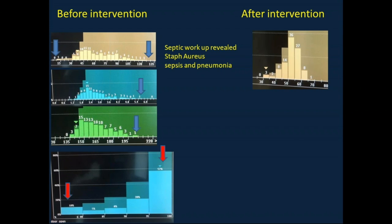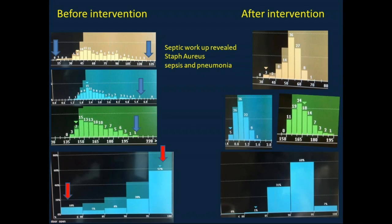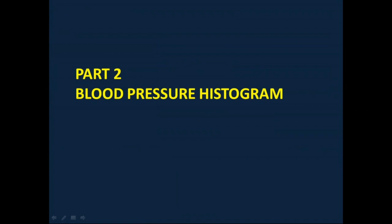The infant was placed on high frequency ventilation. A few days later, after improvement, the histograms showed clear improvement in pattern — respiratory rate, perfusion index, heart rate, and oxygen histograms all normalized. This was after weaning back to CPAP, demonstrating the value of histograms in tracking clinical progress.